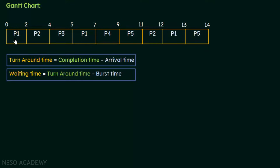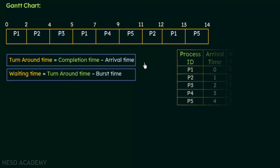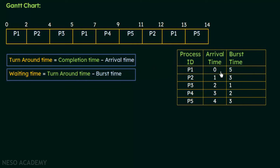For example, for p1 let's see where p1 occurred last — it occurred here, here, and also here. This is the last occurrence of p1 and its completion time is 13. That is how you find the completion time from the Gantt chart. We also need the arrival time from the table. The waiting time is calculated as turnaround time minus the burst time, which can also be found from the table.